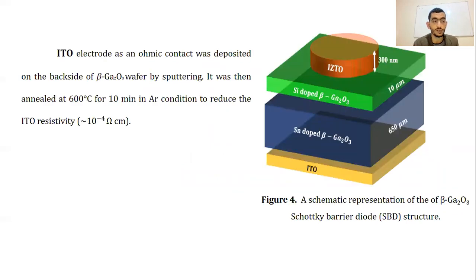Indium tin oxide electrode as ohmic contact was deposited on the back side of gallium oxide buffer by sputtering. It was then annealed at 600 degrees for 10 minutes in argon condition to reduce the indium tin oxide resistivity to about 10 to the minus 4 ohm centimeter. The full Schottky barrier diode structure is presented in figure 4.